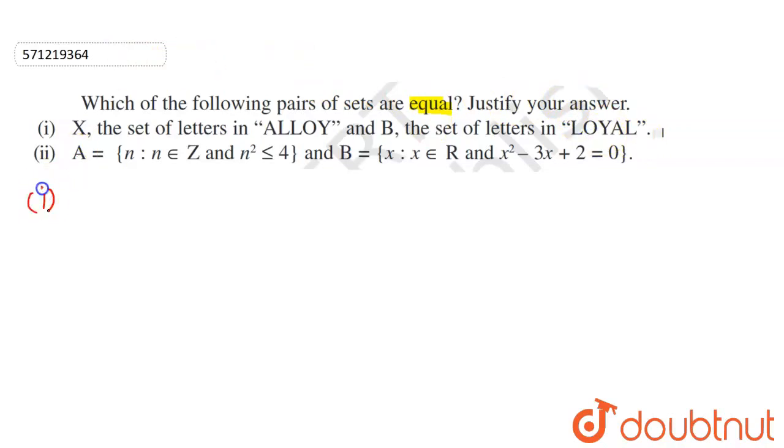Let us write this into the roster form. So roster form will be consisting of the set of letters in the word ALLOY. So A will come here, L will also come here. L is already here, so this letter will not be repeated. O will come here, and Y will also come here.